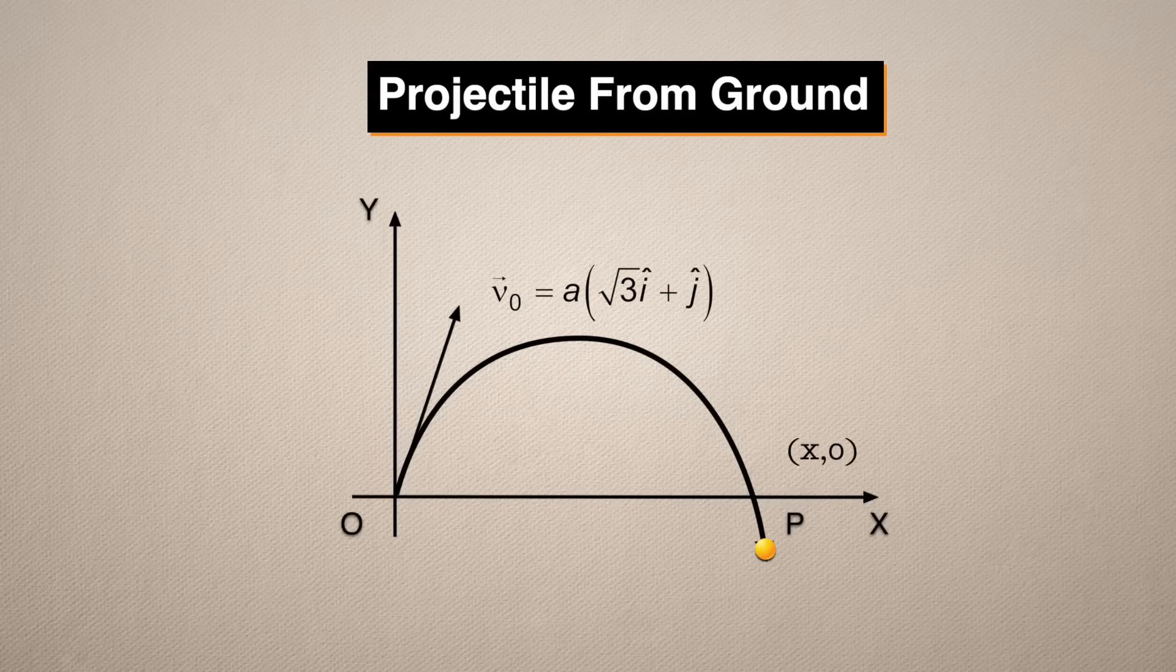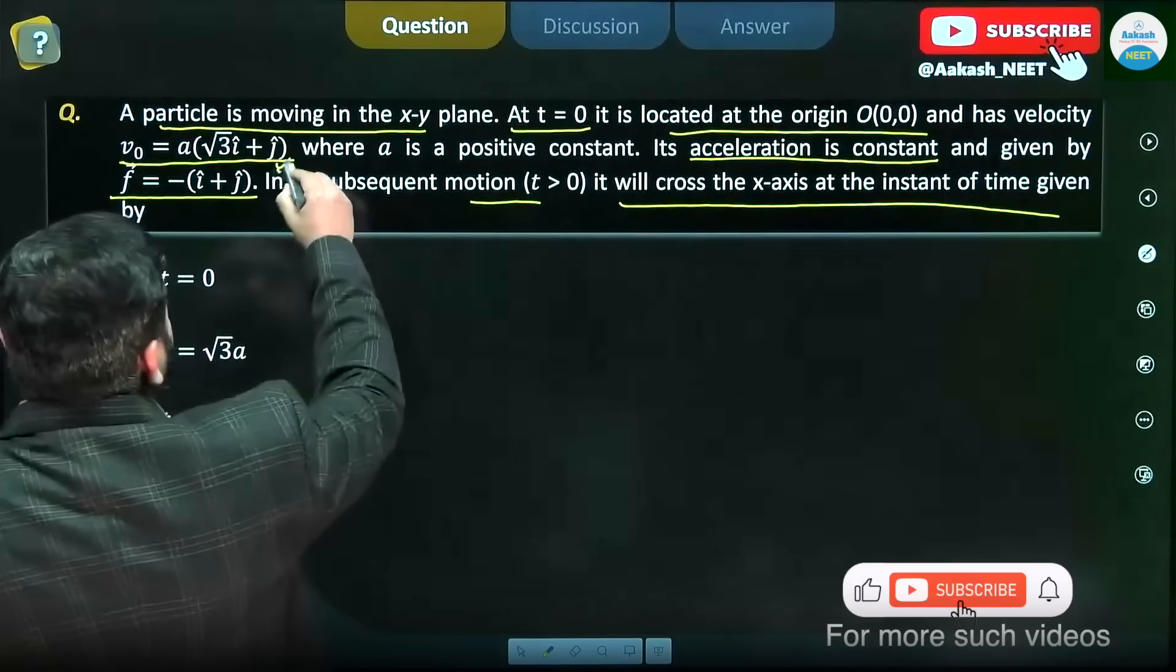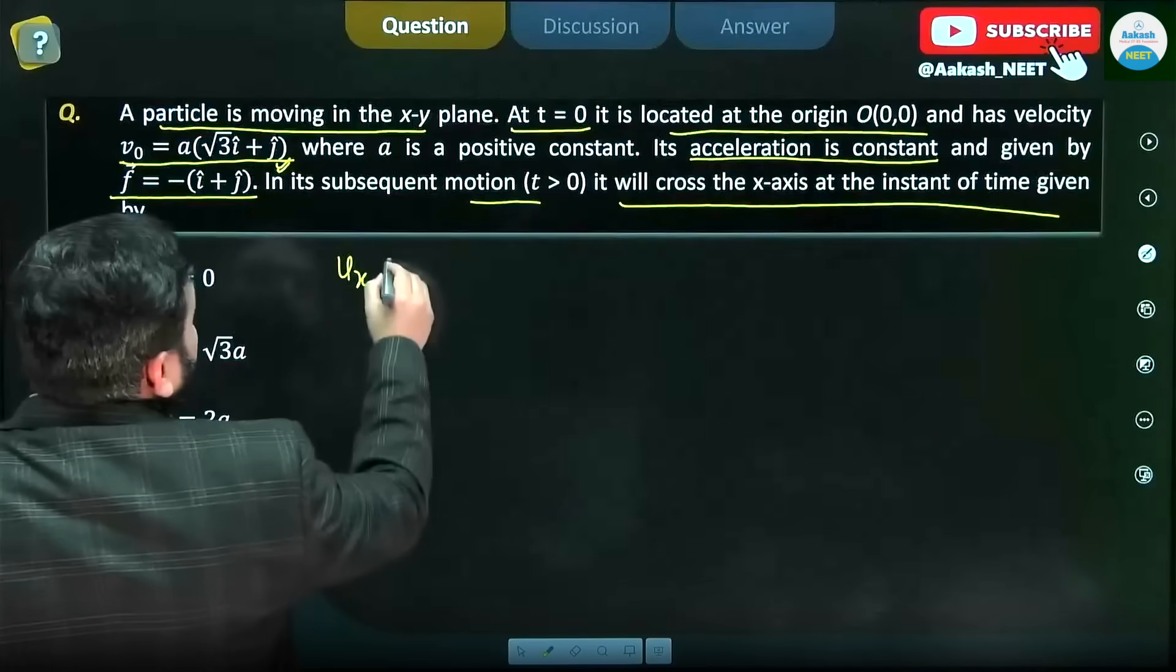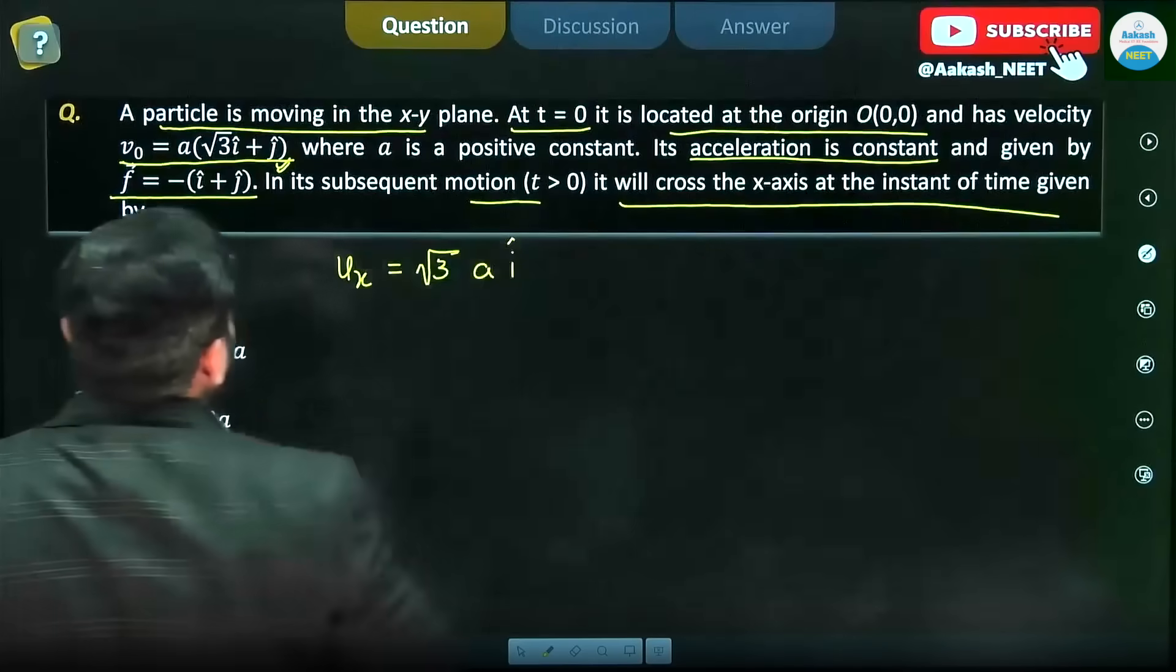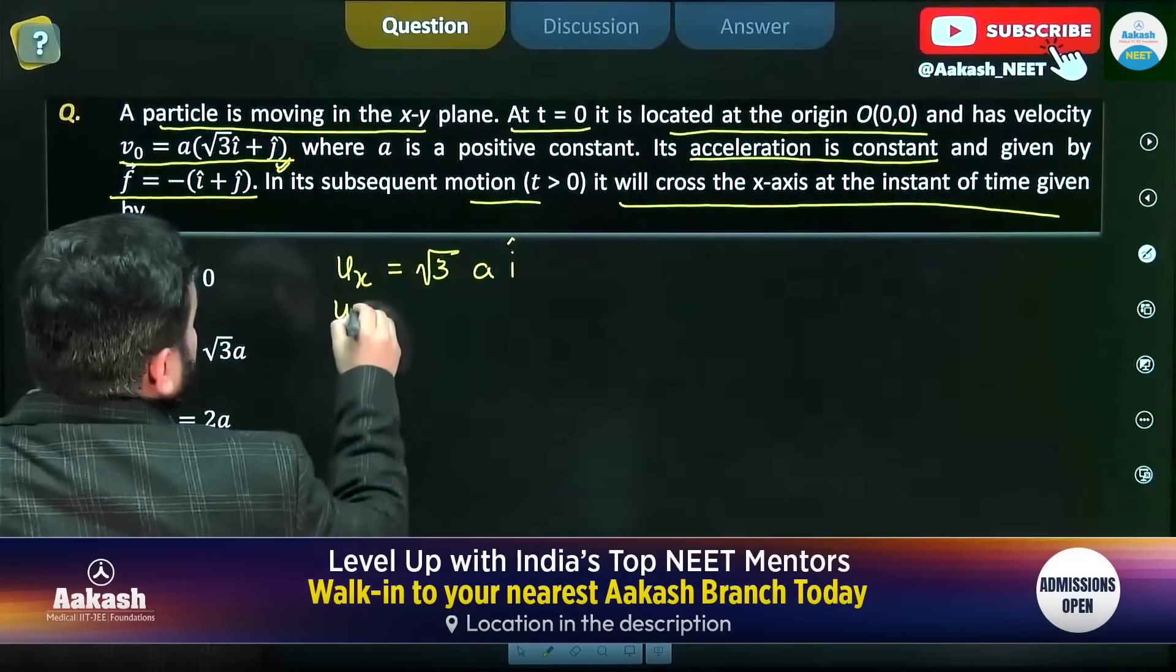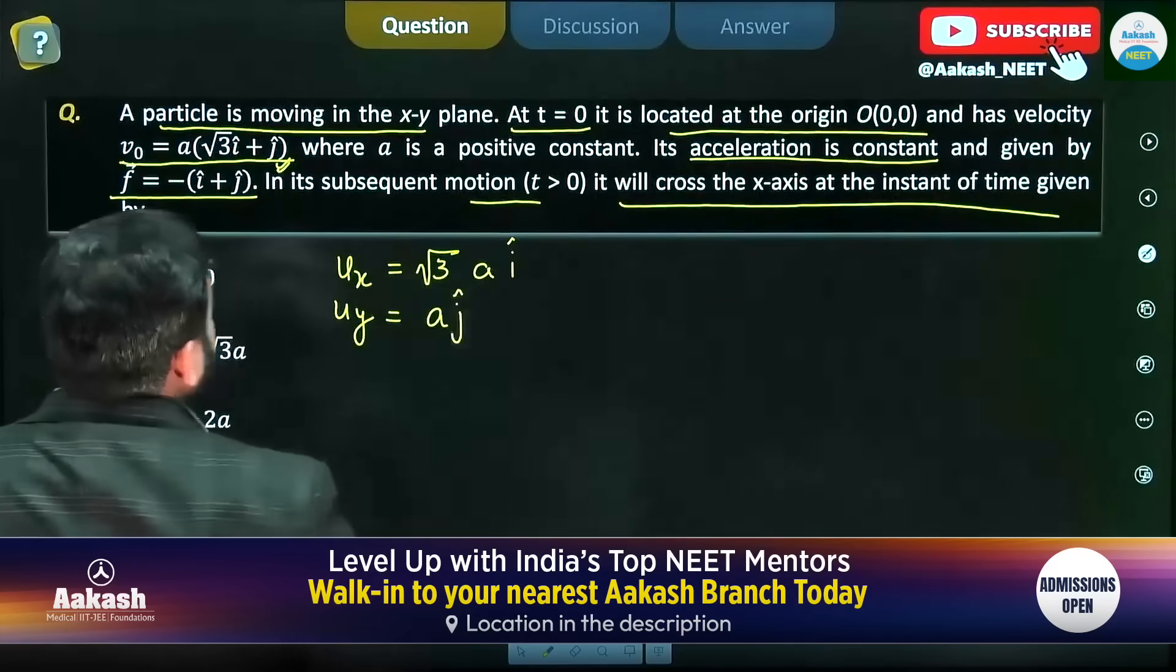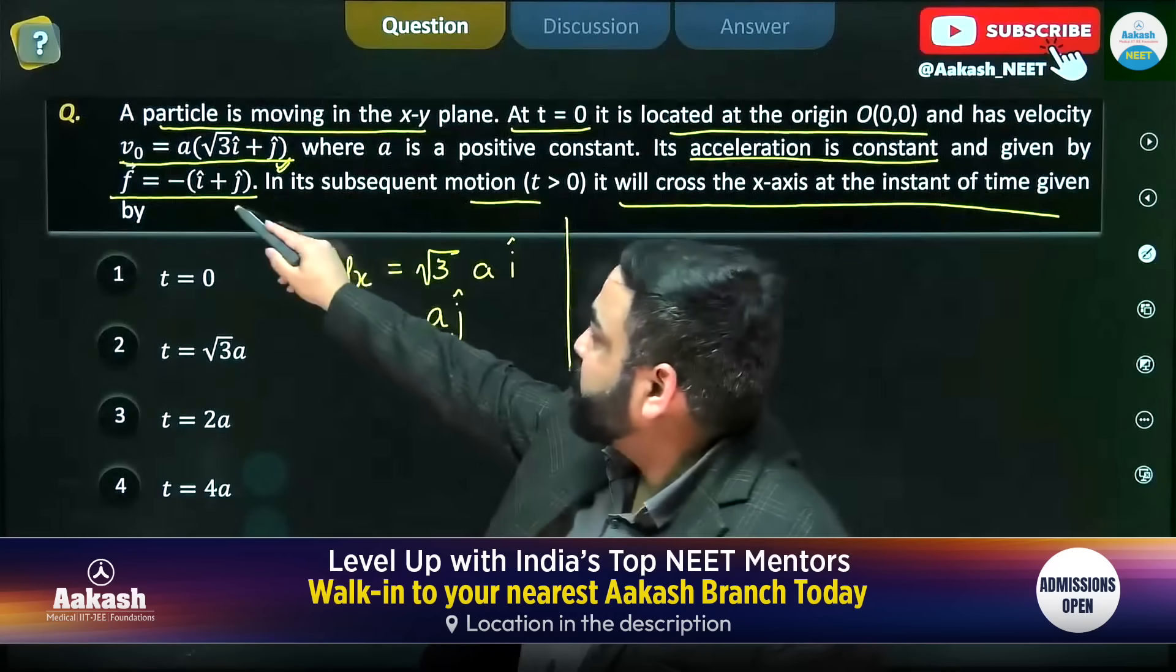What can we do? What can we build up here? If we talk about this expression, we have uₓ = √3a i and uᵧ = a j. In the same way, if we talk about acceleration...